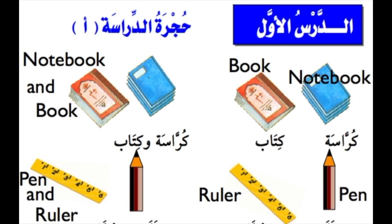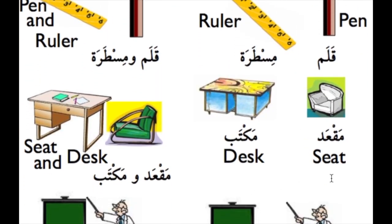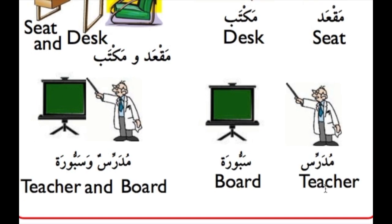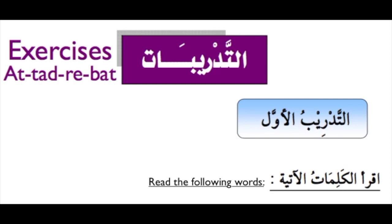Let's begin with our first word. كُرَّاسَ — كِتَاب — كُرَّاسَ هو كِتَاب. قَلَم — مِسْطَرَ. مَقْعَد — مَكْتَب. مُدَرِّس — سَبُّورَ. مُدَرِّس وَسَبُّورَ.